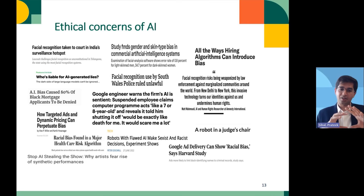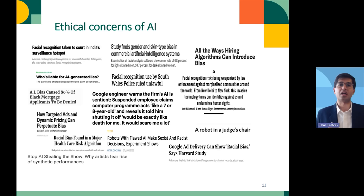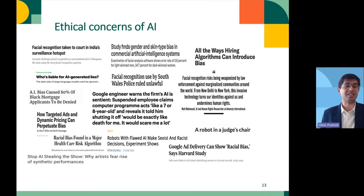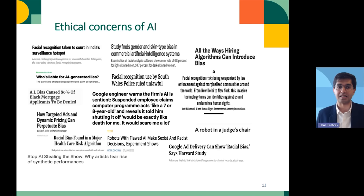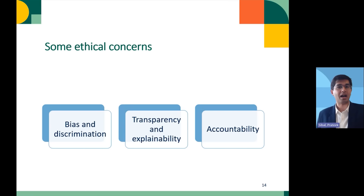We've seen the broad categories of artificial intelligence, and we've also seen a lot of AI-related concerns in the news — for instance, facial recognition systems that are often misidentifying women or people of color, or algorithms used to determine whether someone should get a loan, which may be discriminatory against certain social groups. So these systems are raising a lot of ethical concerns. Let's look at bias and discrimination: AI systems are trained on large amounts of data, and if this data has biases, the outputs of these systems will reflect those biases.